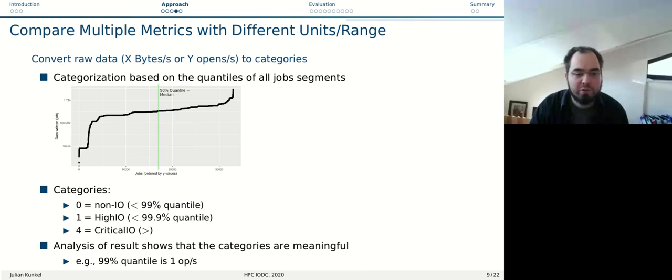What we needed to do was to compare different metrics, different units and ranges. For example, metadata creates per second - how can you compare this with bytes per second? That's very difficult. We wanted a solution that works on different data centers too. What we did is we converted the raw data into categories. We have three categories: zero is basically non-I/O, one is high I/O, and value four numerically means critical I/O. We did this based on the quantiles of the data observed in the data center.